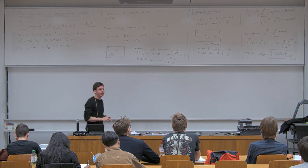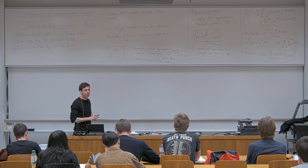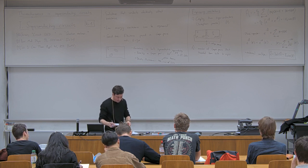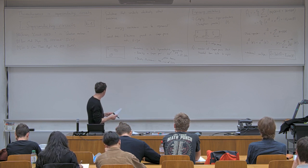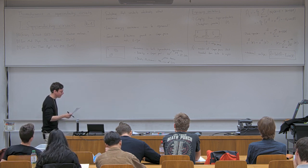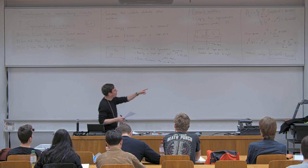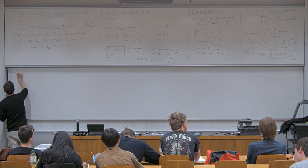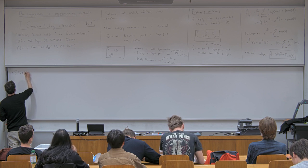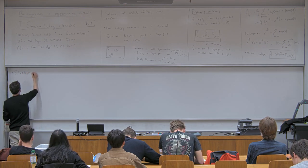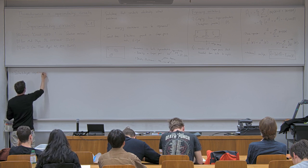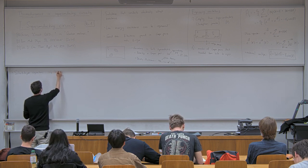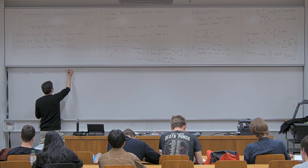This is the first way to engineer excitations in a superconductor: we connect two superconductors, allow for tunneling — the tunneling results in the Josephson Hamiltonian — and then we apply an external voltage such that Cooper pairs have a higher energy on one side. Before we move on to the second way of engineering excitations, let's look at the Schrödinger equation given that Hamiltonian. The time-dependent Schrödinger equation can actually be solved for this Hamiltonian — I will just write down the solution.